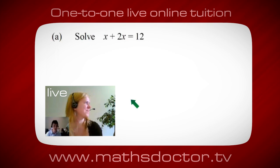Okay Marie, so let's have a look at this one. So solve x plus 2x equals 12. So what do you think you do first? Okay, well I want x on its own so I would put x equals 12 minus 2x.